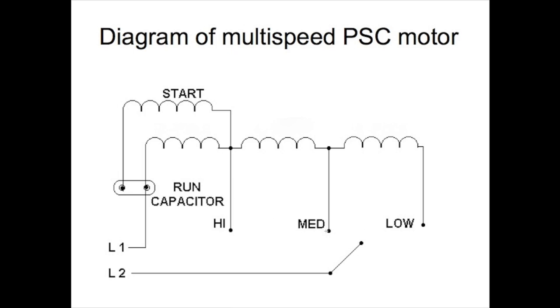Then if I go to a medium, there will be a longer winding, more resistance, lower speed. Actually, lower amp draw, which equates to a lower speed.